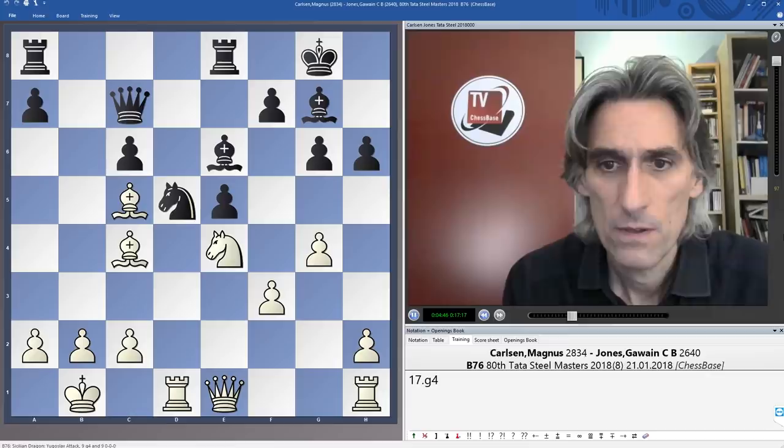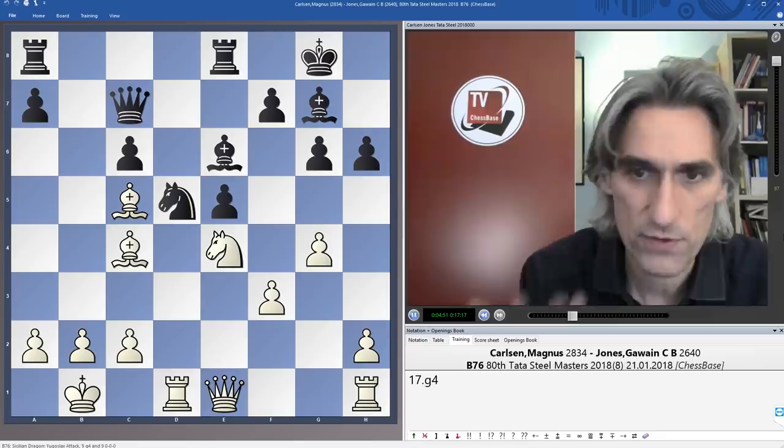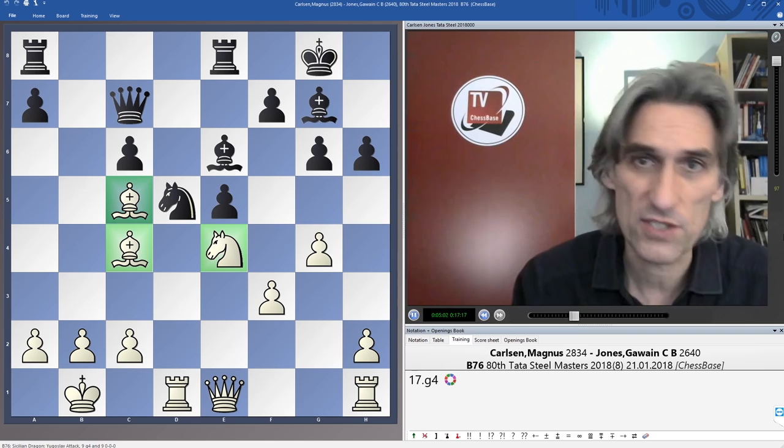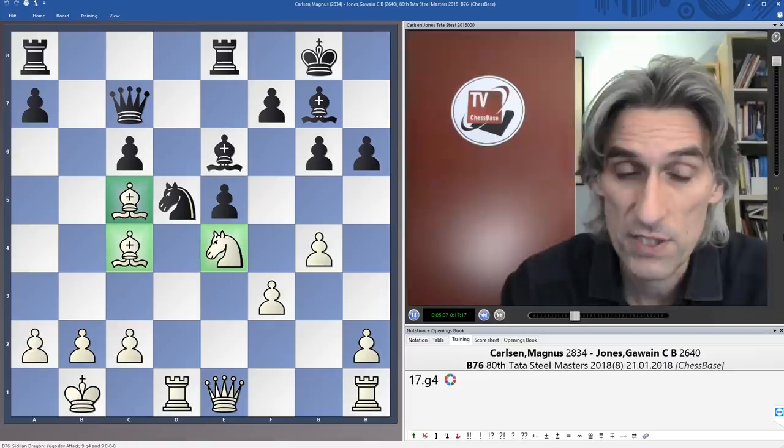I mean, this was a game between Peter Leko and Lawrence Trent from 2016. And Leko won a very nice positional game, actually. You can see that white's minor pieces are excellently placed here. And black tries to stir things up and get some kind of attack. But if he doesn't, then those pieces stand very well.